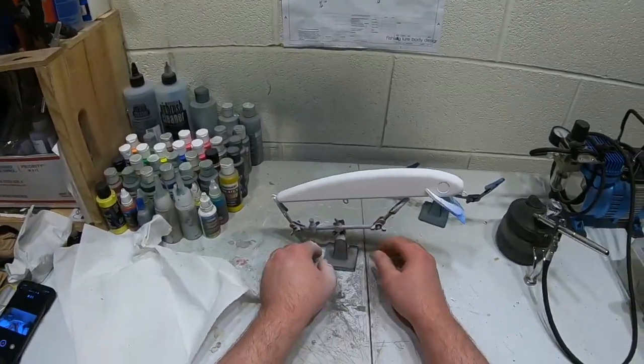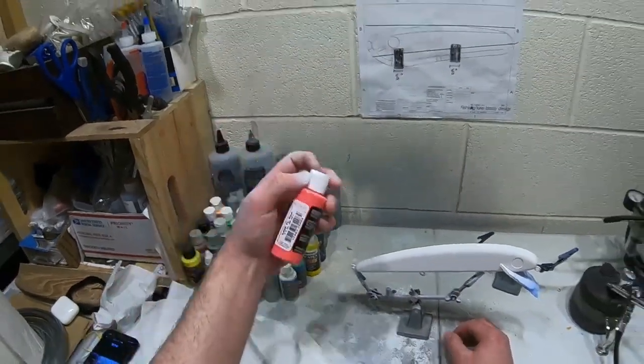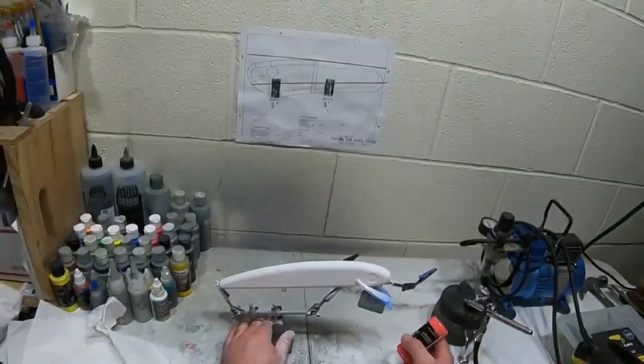Okay, so now that I have the white base coat done, I'm going to go ahead and go over it with a fluorescent red just to make it really pop for the base coat. And then I'm going to do some scales over top of that, so let's get right to that.